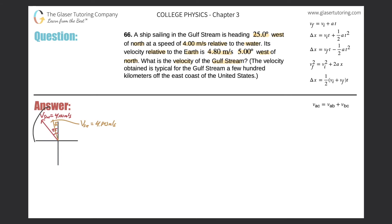Here I have drawn a coordinate system with the vectors given in the problem. Here is the velocity of the ship relative to the water — they said it's traveling at 4 meters per second at an angle of 25 degrees west of north. They also told us the velocity of the ship relative to the earth: 4.80 meters per second at 5 degrees west of north.